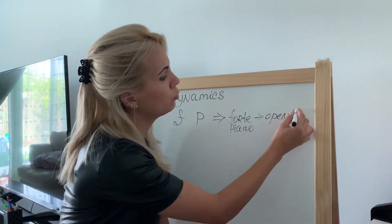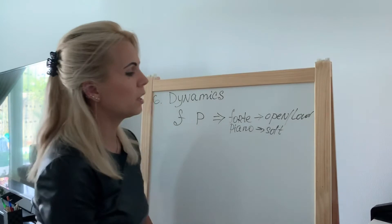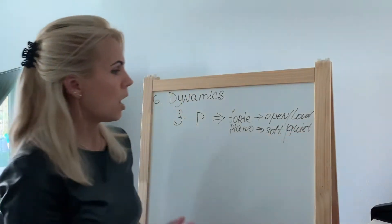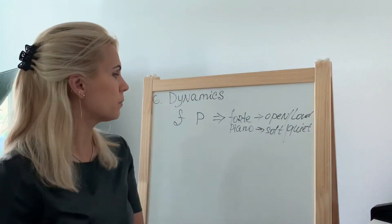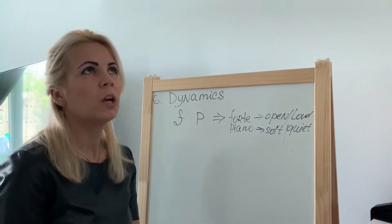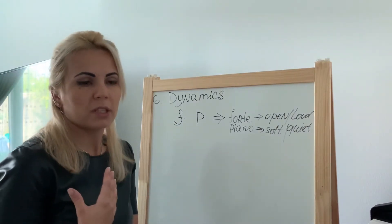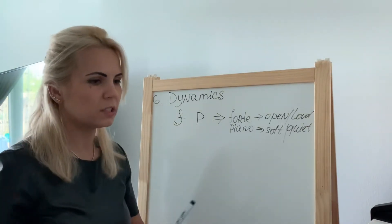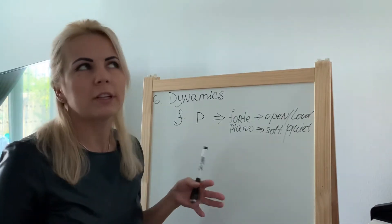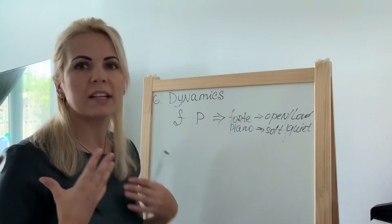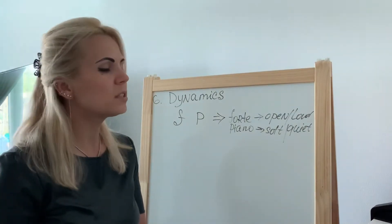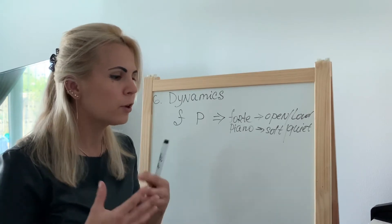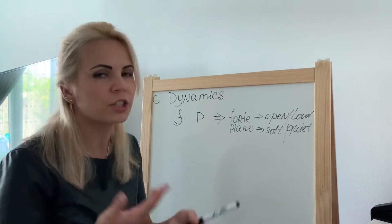Piano means soft and quiet. Beyond just dynamics, I prefer to think of them as describing the kind of mood you want to give to your piece. Forte is very open, very bright — kind of showing off. Piano is very soft, quiet, almost velvety — it gives a cozy sound or very soft touch. These are the types of moods those two terms represent.